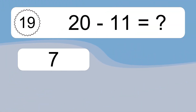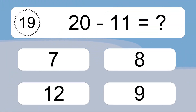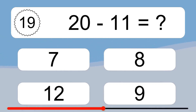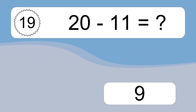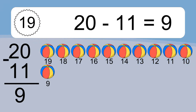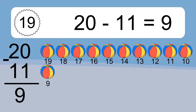20 minus 11 equals what? 20 minus 11 equals 9. Let's count it: 19, 18, 17, 16, 15, 14, 13, 12, 11, 10, 9.